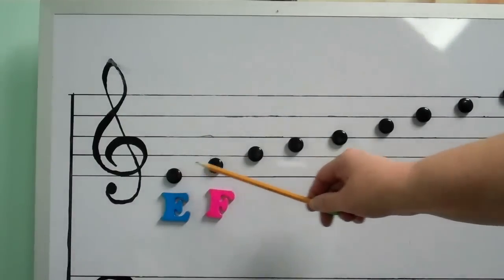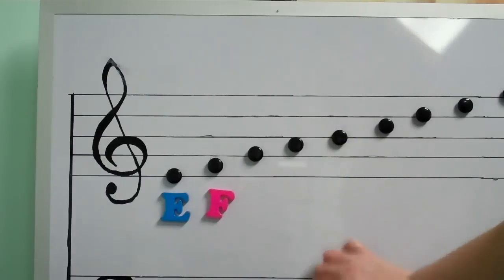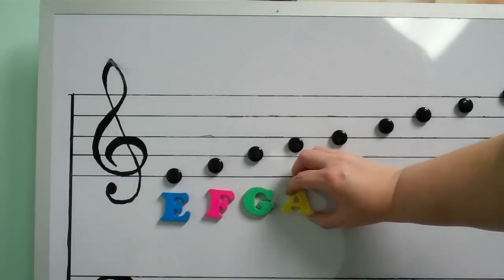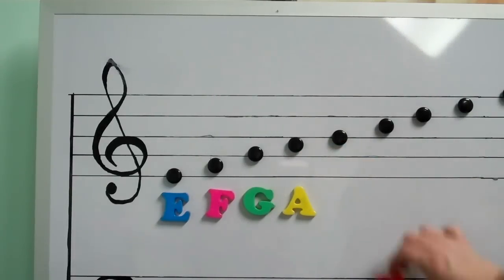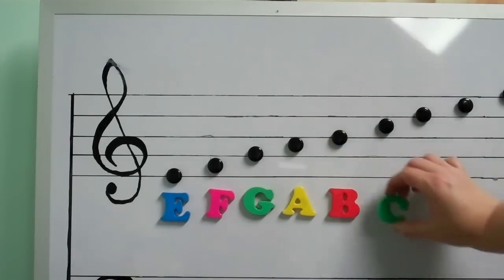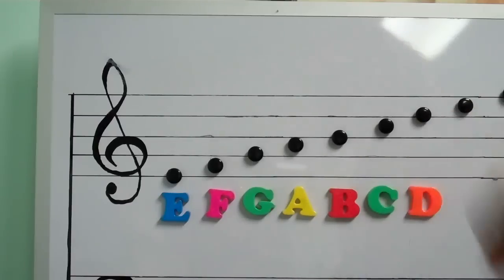Noteheads are placed on the lines and spaces of the staff, and as they ascend, we also move up the alphabet. After G, we're going to begin again with the first letter of our alphabet, A, and then continue on up the staff following the alphabet.